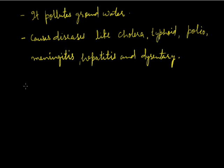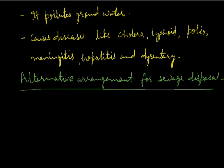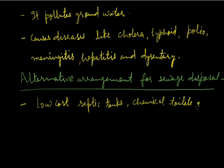Now we can have alternative arrangements for sewage disposal. To improve sanitation, low-cost on-site sewage disposal systems are being encouraged. For example, septic tanks, chemical toilets, composting pits, etc. are used. These reduce the spread of untreated human excreta and reduce the pollution of water. Septic tanks are suitable for places where there is no sewage system.